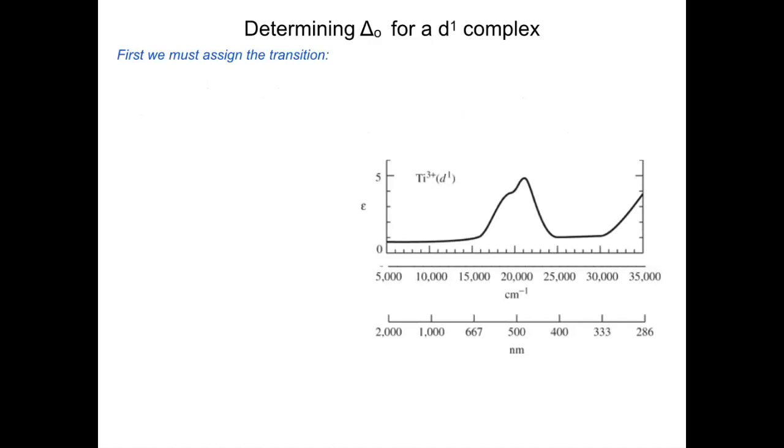For a D1 complex we can start with this titanium 3. This is a D1 complex. Here's our UV-visible spectra. We want to determine what is delta octahedral. First we need to assign the electronic transition. We have to remember if we have a D1 complex we need to go back to our correlation diagrams. There is no Tanabe-Sugano diagram for a D1 complex.